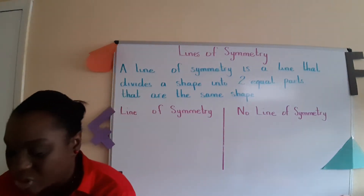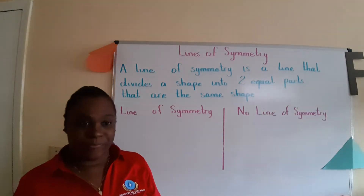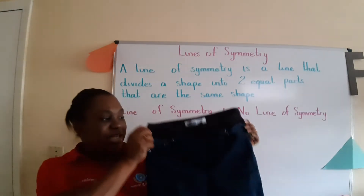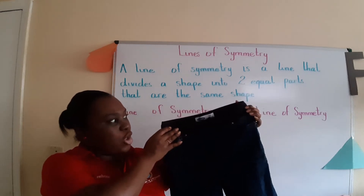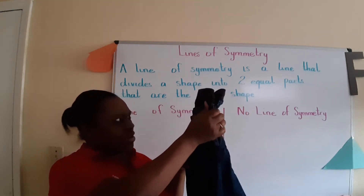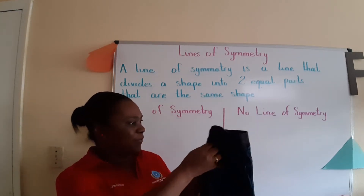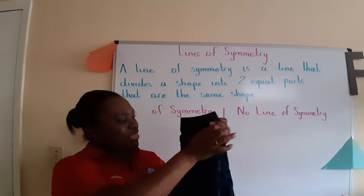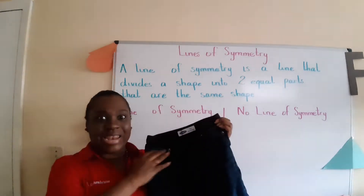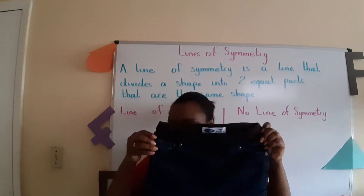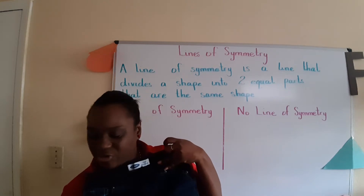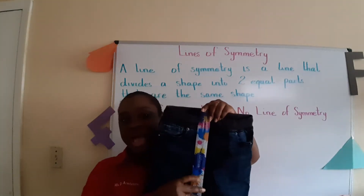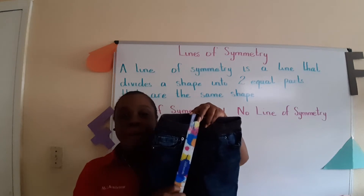Today I want you to help me fold some clothing. I know a lot of you help your parents when it comes to laundry and you help them fold clothing. So I have a pair of jeans here and I am going to fold my pair of jeans. I notice when I fold this pants, this side is the same as this side — it matches. So therefore these pants have a line of symmetry. If I was going to draw the line of symmetry, I would use my ruler and draw the line straight down to show my line of symmetry.